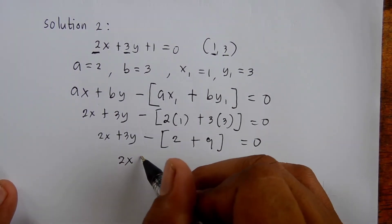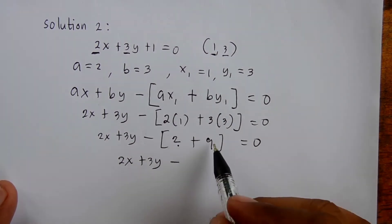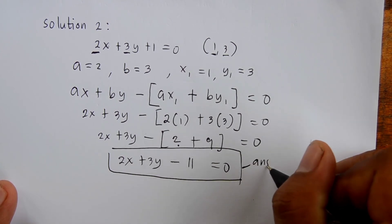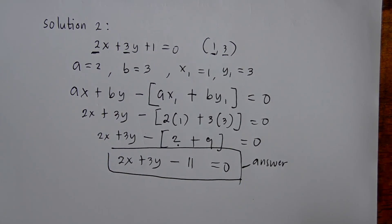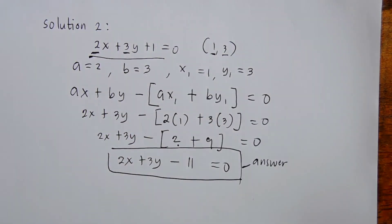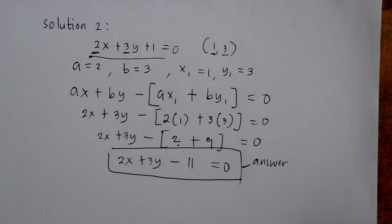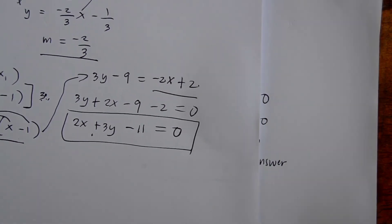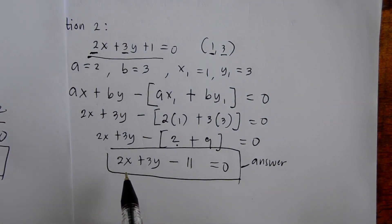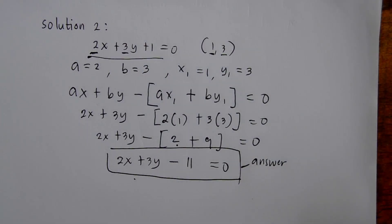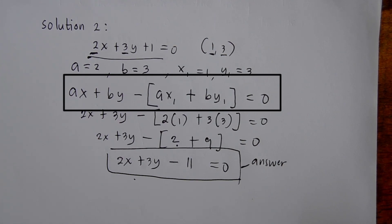Copy 2x plus 3y minus — get the sum of 2 and 9, that is 11 — equals 0. So the answer is 2x plus 3y minus 11 equals 0. As you observe in the first solution, we have the same answer: 2x plus 3y minus 11 equals 0. In the second solution, we use ax plus by minus the quantity of ax sub 1 plus by sub 1 equals 0.